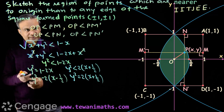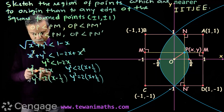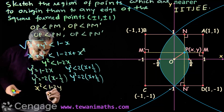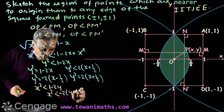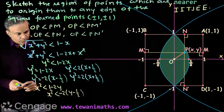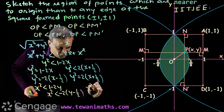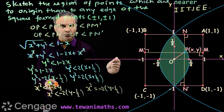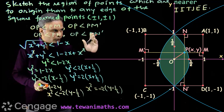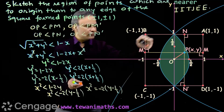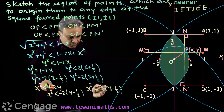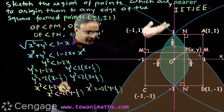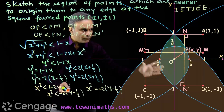We have two more inequalities. From OP less than PN, we get X squared less than 1 minus 2Y, or X squared less than minus 2 times (Y minus 1/2). Point P will lie in the interior region of the parabola X squared equals minus 2 times (Y minus 1/2), which has vertex at (0, 1/2) and intersects the X axis at (1, 0) and (-1, 0). This parabola opens downwards because the coefficient is negative. The common region is updated accordingly.